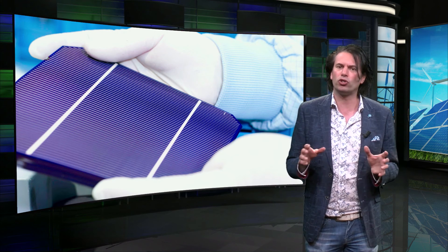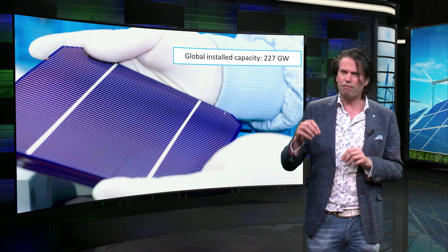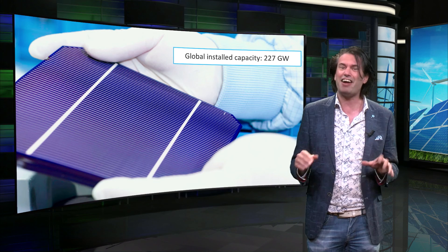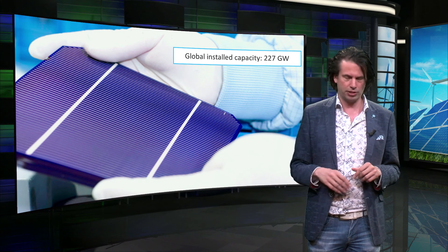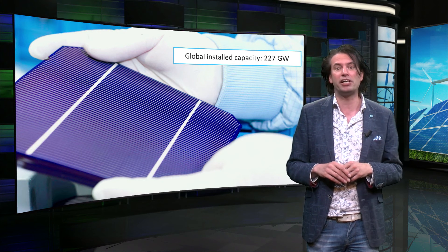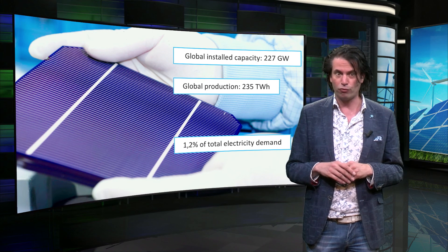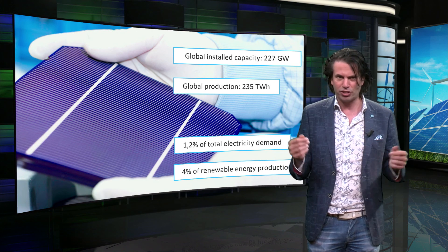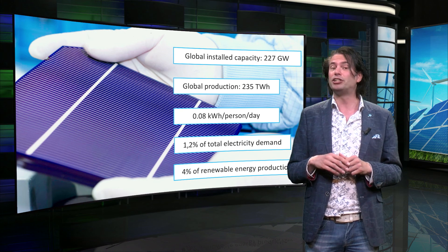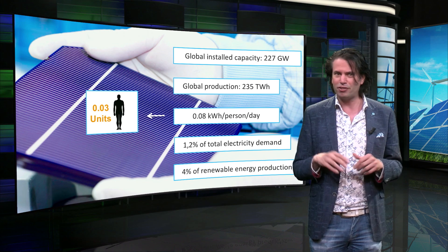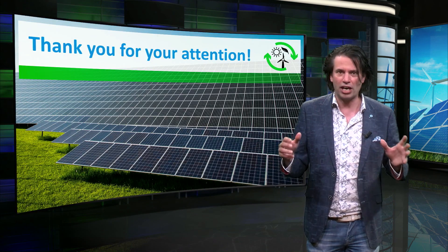Although solar energy is one of the smallest contributors in sustainable energy, with an installed capacity of 227 GW in 2015, it is the fastest growing energy source. A recent trend is that every two or three years the installed capacity is doubled. Concentrated solar power contributes only about 3% of this capacity. PV and concentrated solar power are producing approximately 235 TWh of electricity, which is a little more than 1% of the global electricity demand and about 4% of all renewable electricity. Divided by the global population of 7.4 billion people, this gives 0.08 kWh per person per day, which is 3% of the energy in the food of a typical person.